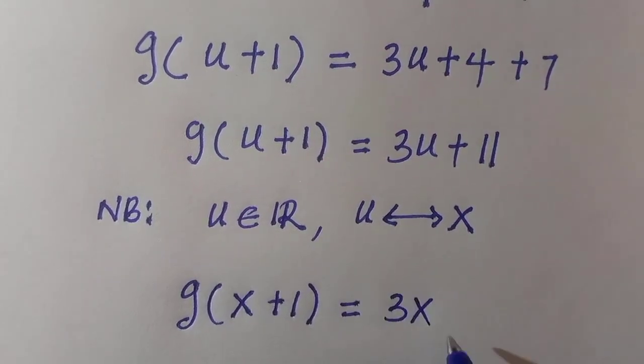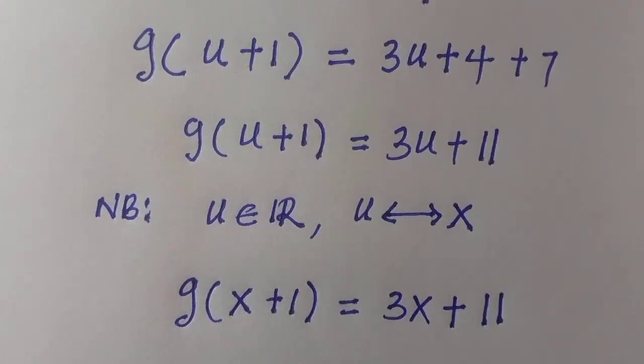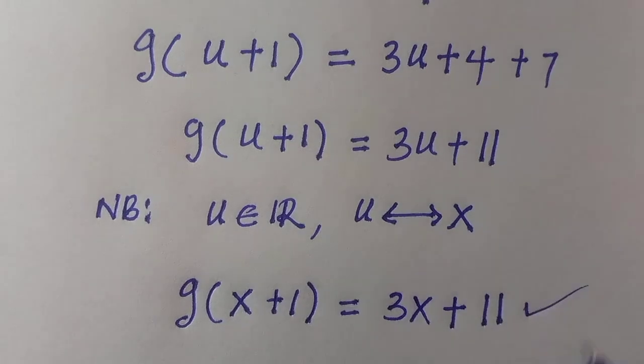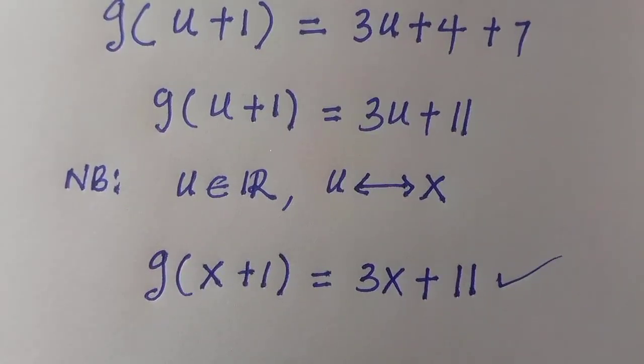g of x plus one equals 3x plus 11. And as usual, we are done with this. So 3x plus 11 is the value of g of x plus one.